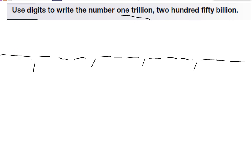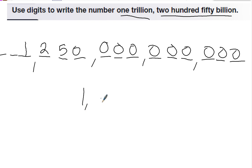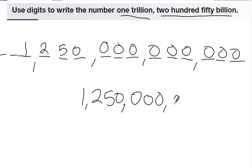I have one trillion, so that goes in the trillions place — one. Two hundred fifty billion goes in the billions place. I don't have any other numbers, so the rest of these places are filled in with zeros. My answer is one trillion, two hundred fifty billion, and you have to make sure to put all the zeros in, otherwise it won't be in the right place value.